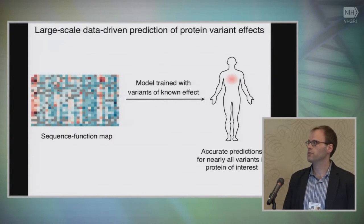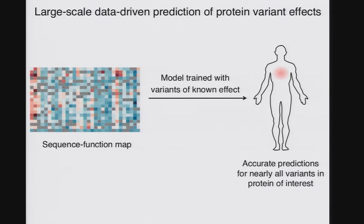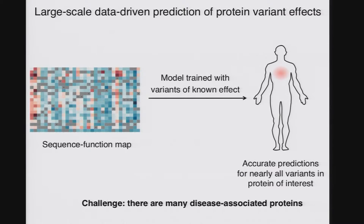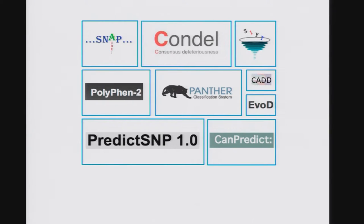Tomorrow, Lea Starita is going to talk about the work she's done making sequence function maps for BRCA1 and then using those maps to train highly accurate models on variants of known effect to make accurate predictions for all the remaining variants. This works really well if you have a high-value target like BRCA1. Although we're trying to develop technologies to scale this to hundreds or thousands of genes, that's not presently possible, and we're left with a challenge: we've got many disease-associated proteins and we'd like to learn about functional consequences of mutations in those proteins.